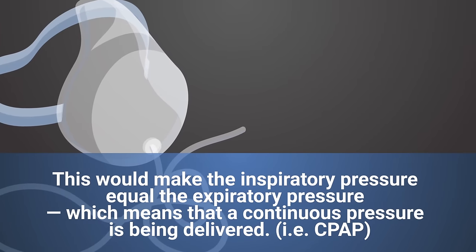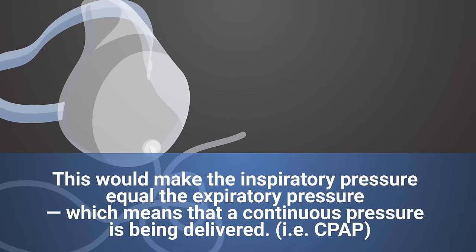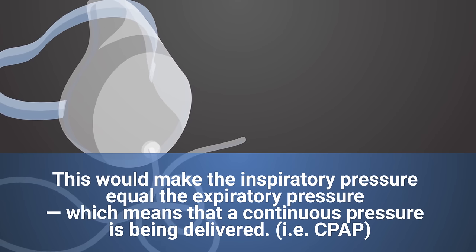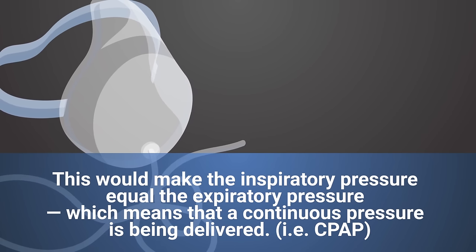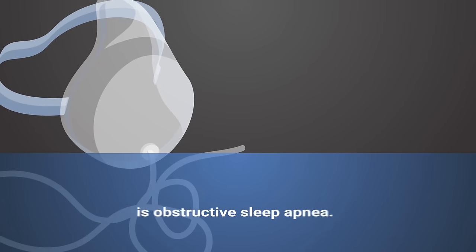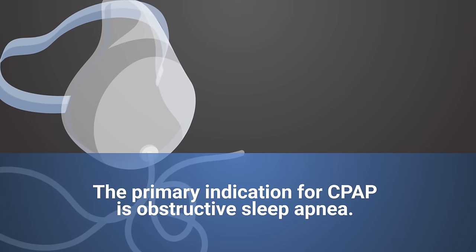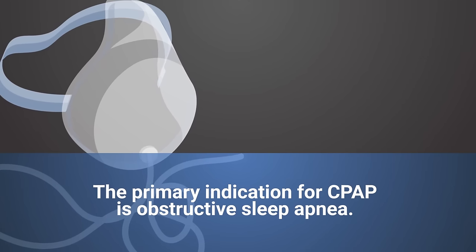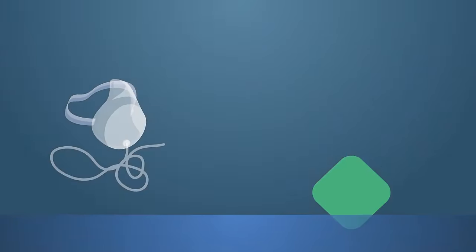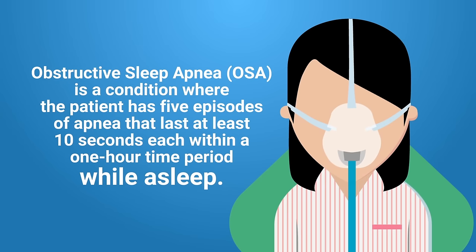When IPAP equals EPAP, the inspiratory pressure equals the expiratory pressure, which means a continuous pressure is being delivered — hence the name continuous positive airway pressure. The primary and most common indication for CPAP is obstructive sleep apnea. Obstructive sleep apnea is a condition where the patient has five episodes of apnea that last at least 10 seconds each within a one-hour time period while asleep.